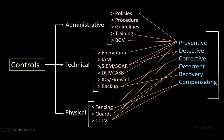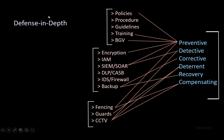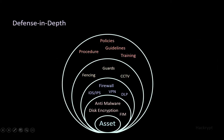To use multiple controls, the best strategy is defense in depth, where we use multiple layers of control. We have the asset at the center, then system-level controls like anti-malware and disk encryption, then network-level controls like firewall and VPN, then physical controls like guards and fencing, and at the top the administrative controls like policies, procedures, and guidelines.